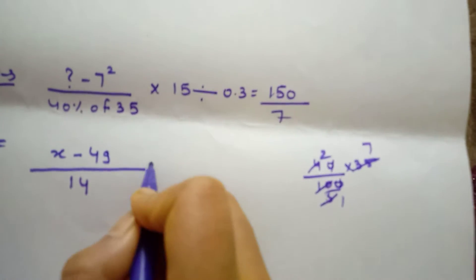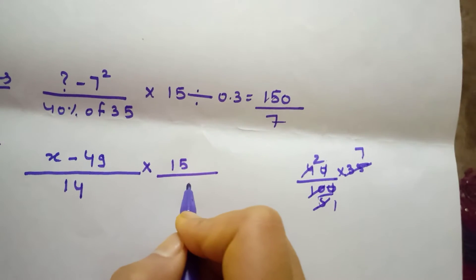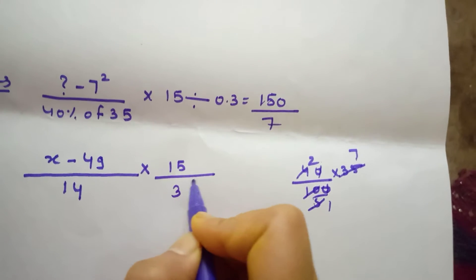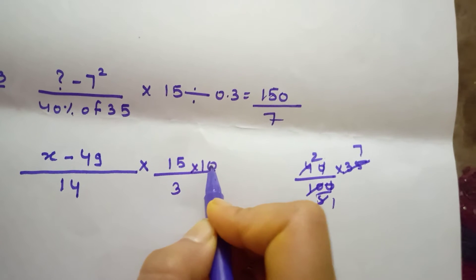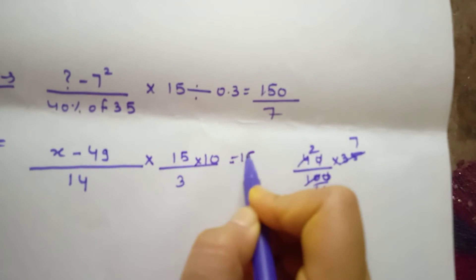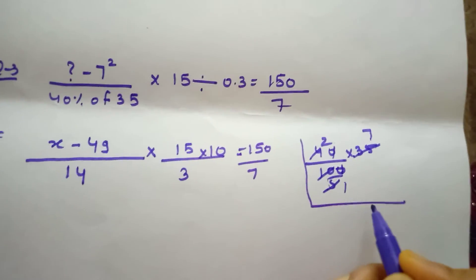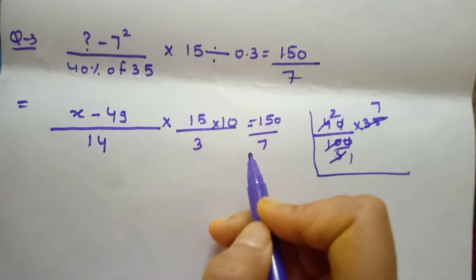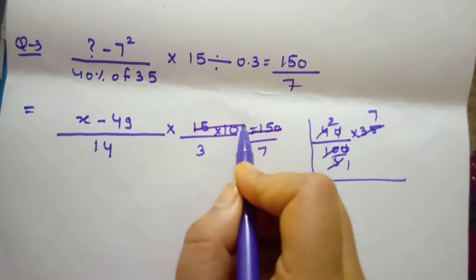Divided by 10 into 15, divided by 0.3, into 10.8, divided by 10, is equal to 150 by 7. Now we will cut — 150 by 150.